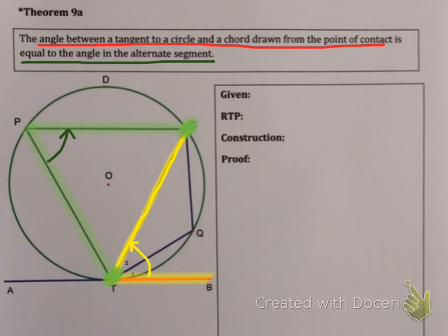Now this theorem is often called the windsurfer angle theorem. Because as you can see the tangent forms like the board of a windsurfer. And the triangle in the circle forms like the sail of a windsurf. And therefore we often refer to this as the windsurfer angle theorem.